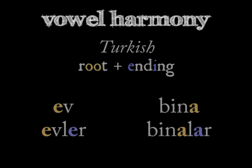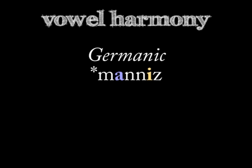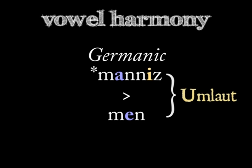A second example: the vowel A in the Proto-Germanic word for 'people' was raised and fronted to E in 'men', under the influence of the high front vowel I in the next syllable. This change towards a high front vowel is called umlaut in the history of the Germanic languages, like English.